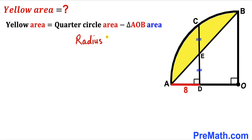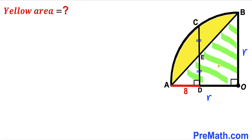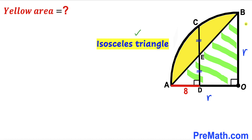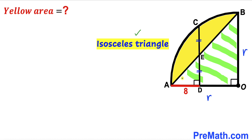We must find the radius of the quarter circle first. Let's label the radius as lowercase r, so OA equals r and OB equals r as well. Focusing on right triangle AOB, it is an isosceles triangle since OB equals AO. Therefore if one base angle is theta, the other base angle is theta as well.